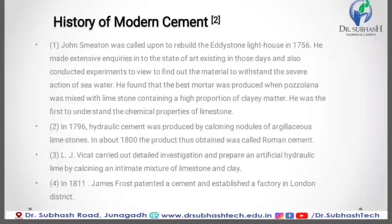In 1796, hydraulic cement was produced by calcining nodules of argillaceous limestone. In about 1800, the product thus obtained was called Roman cement. Then L.J. Vicat carried out detailed investigation and prepared material for an artificial hydraulic lime by calcining an intimate mixture of limestone and clay. Then in 1811, James Frost patented a cement and established a factory in the London district.